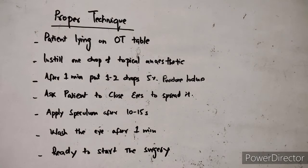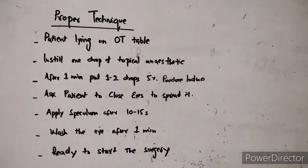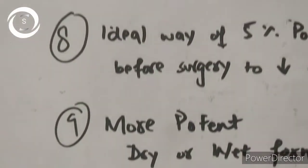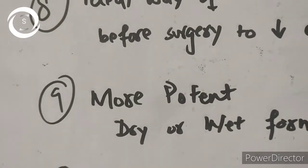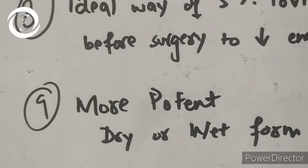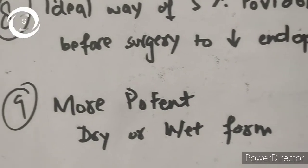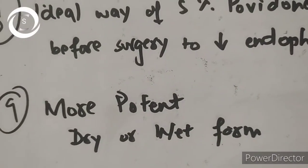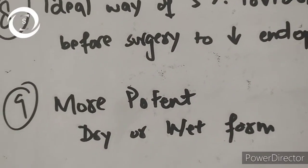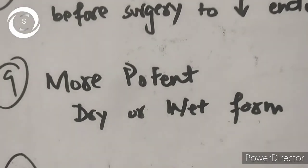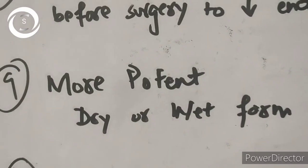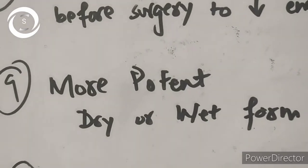The correct technique: first put a topical anesthetic drop like Alcaine to neutralize the stinging effect, then put two to three drops of 5% povidone iodine into the eye and ask the patient to close their eyes so the drop is properly spread by the tear film. After 10 to 15 seconds, apply the speculum — but still don't wash it. Leave it to dry for another one minute.